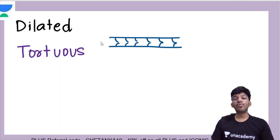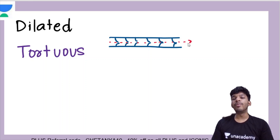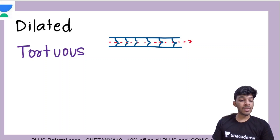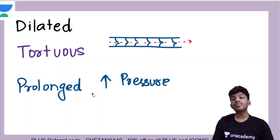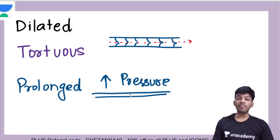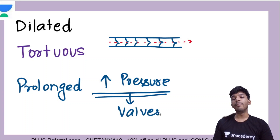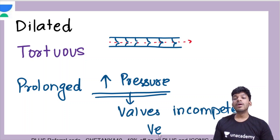The valves allow the venous blood to flow in a unidirectional way, but try to prevent backflow. However, because of excessive pooling of blood, there is a prolonged increase in pressure. There is an extra volume of blood found in these veins. Because of this prolonged increase in pressure, the valves become incompetent, the vessels dilate, and they become visible on the surface. This is the pathophysiology behind varicose veins.